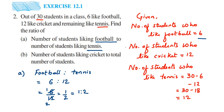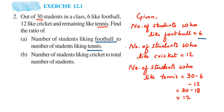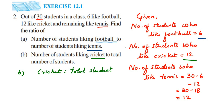Now let's find the answer for the second question. I'm going to erase this. The second question asks for the number of students liking cricket to the total number of students. The number of students who like cricket is 12, so we write cricket is to total students.